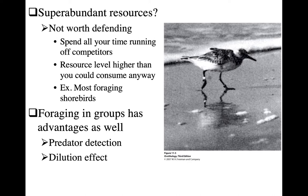There are other reasons why you'd want to not be territorial. There are advantages to foraging in groups: when your potential for predator attack is fairly great, you have better predator detection capabilities when foraging in a group — as demonstrated with starlings previously. And you can also benefit from the dilution effect: if a predator successfully kills someone in your group, the bigger the group, the lower the probability that you are the individual killed.